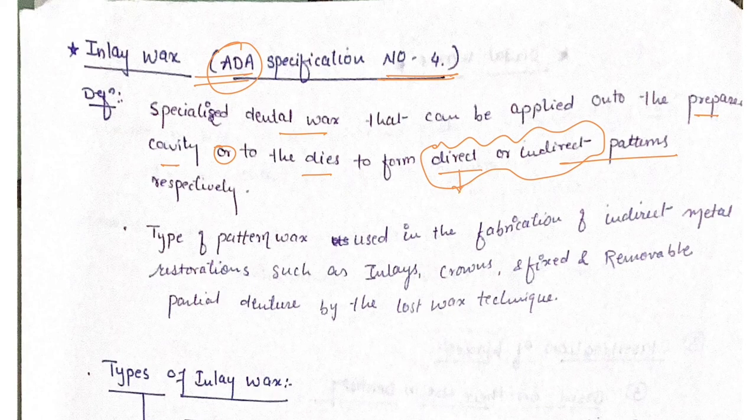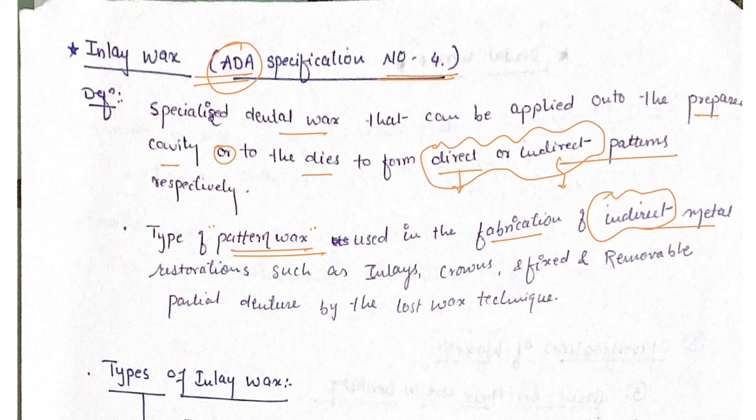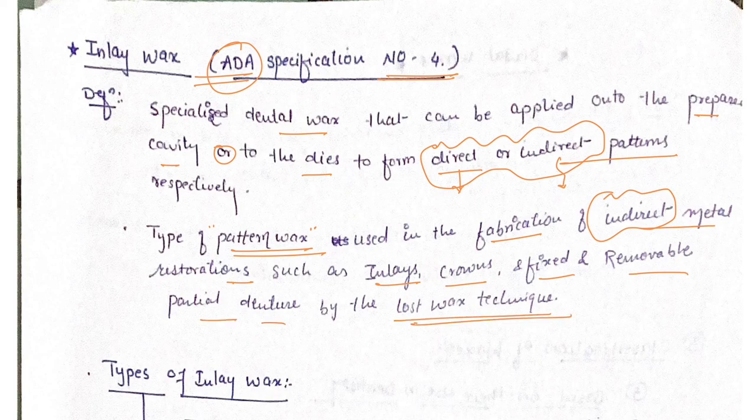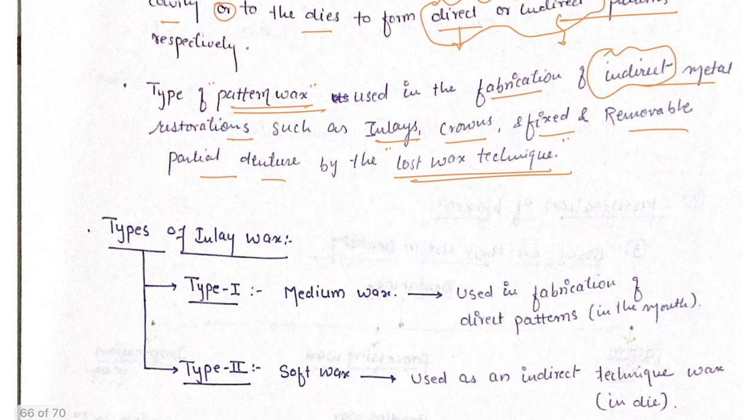Another definition: type of pattern wax used in the fabrication of indirect metal restorations such as inlays, crowns, fixed and removable partial denture by the lost wax technique.